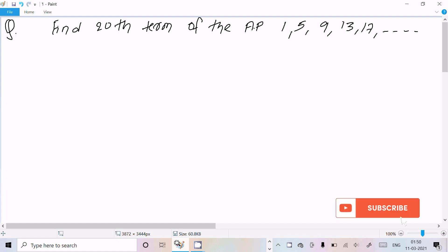Hello friends, in this video lecture I am going to find the 20th term of the AP. The given AP is 1, 5, 9, 13, 17 and so on. So let's see the answer. Here the given arithmetic progression is 1, 5, 9, 13, 17 and so on.